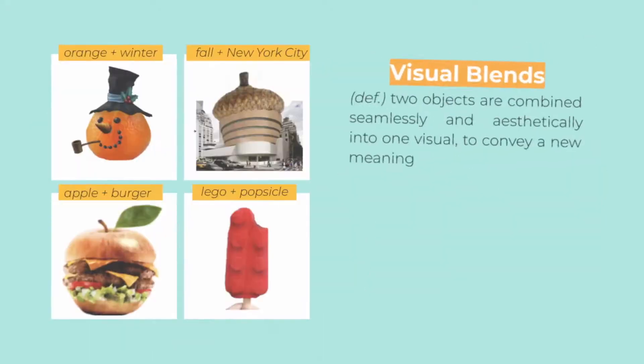We focus this question on visual blends, which are when two objects are combined seamlessly and aesthetically into one visual to convey a new meaning. Some examples are shown on the left.